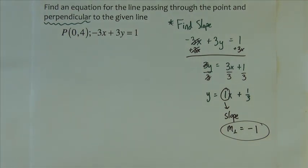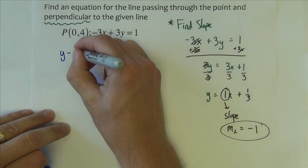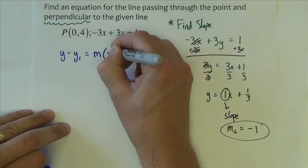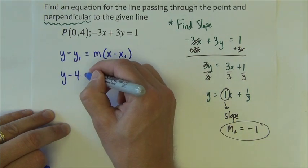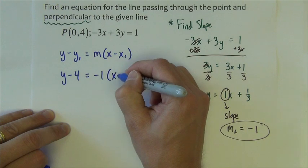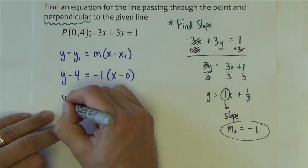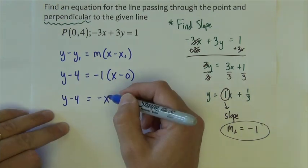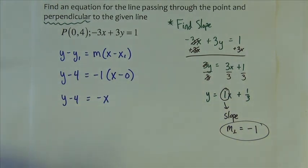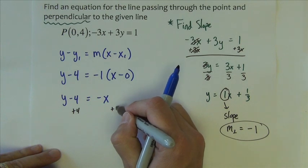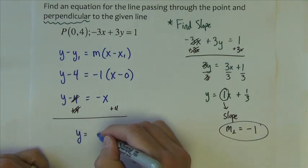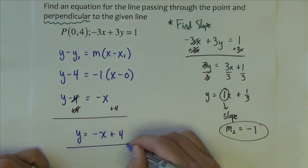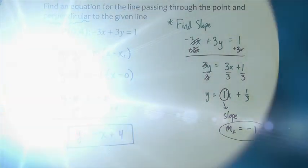Now let's go into point slope. y minus y1 equals mx minus x1. So that'd be y minus the y value, 4, equals slope negative 1x minus 0. So we get y minus 4 equals negative x. To solve this, we just need to add 4 to both sides, giving us y equals negative x plus 4.